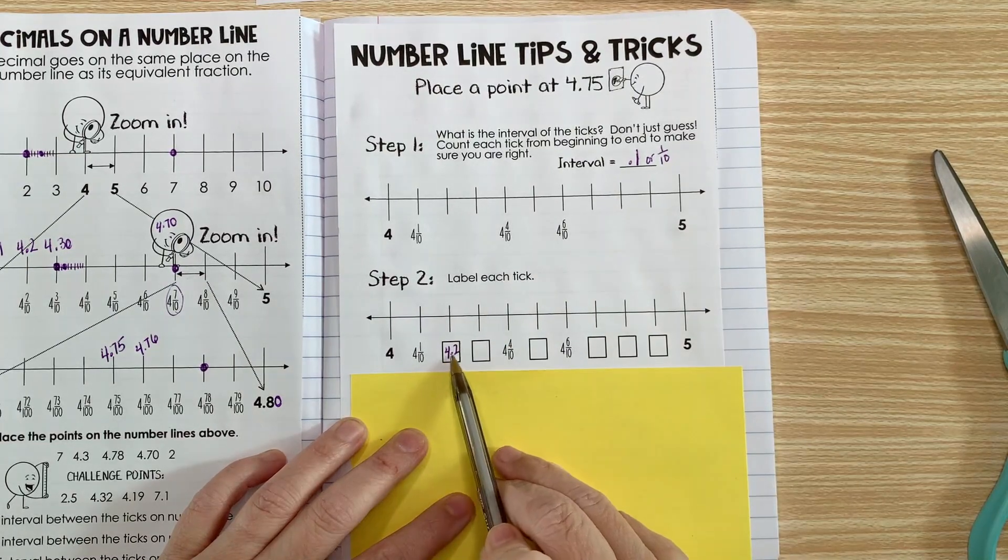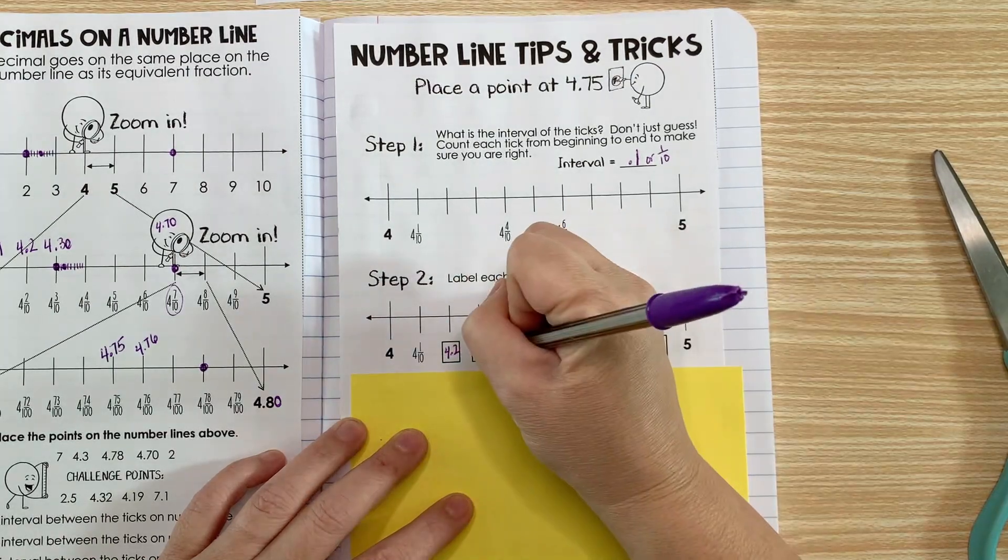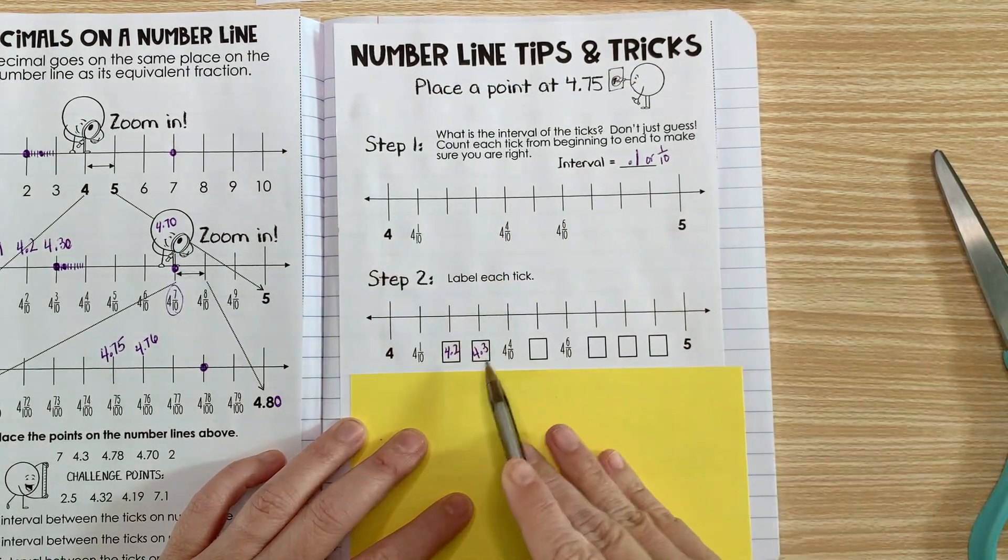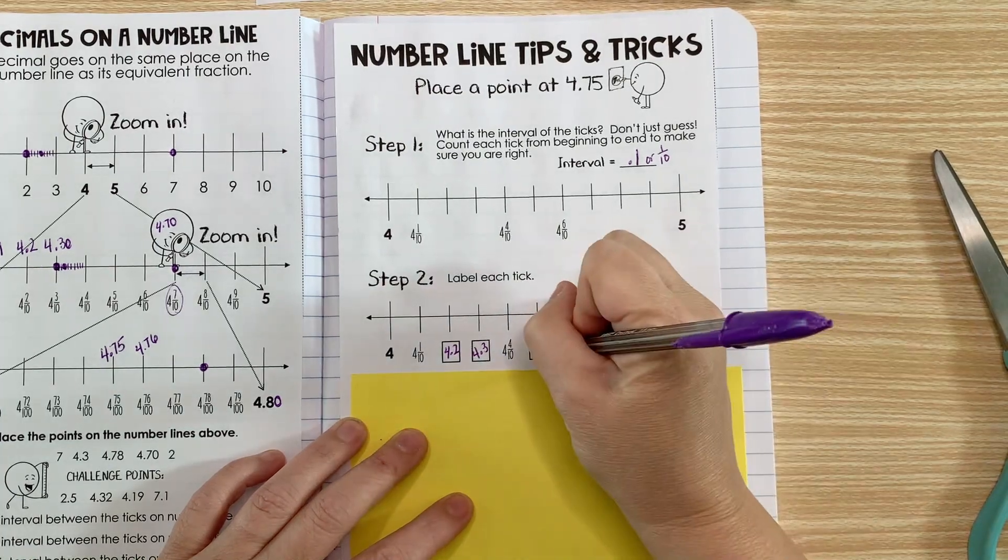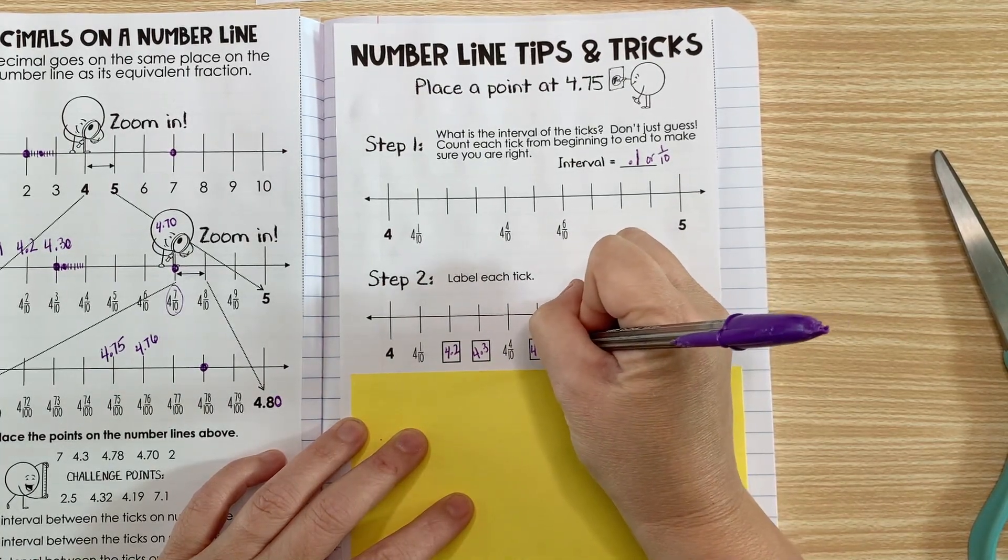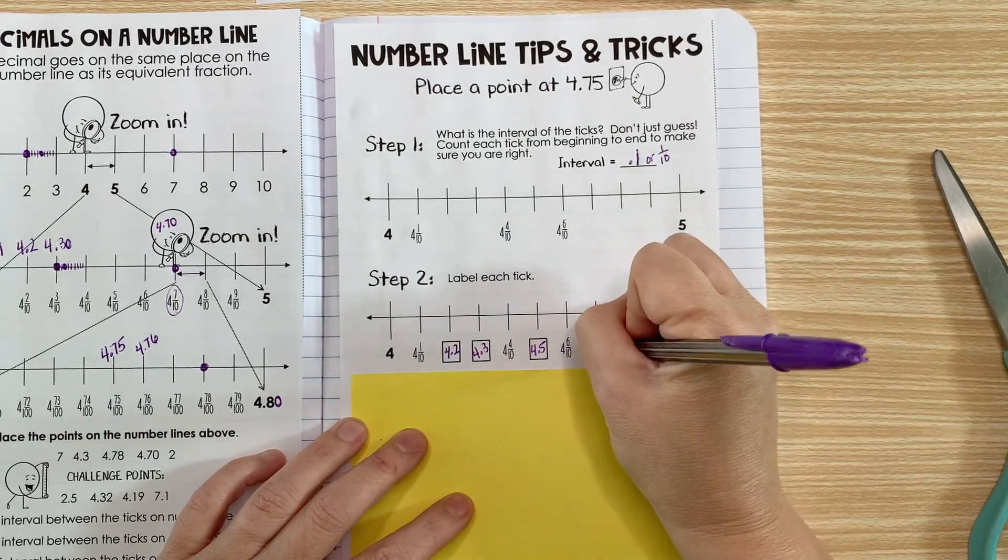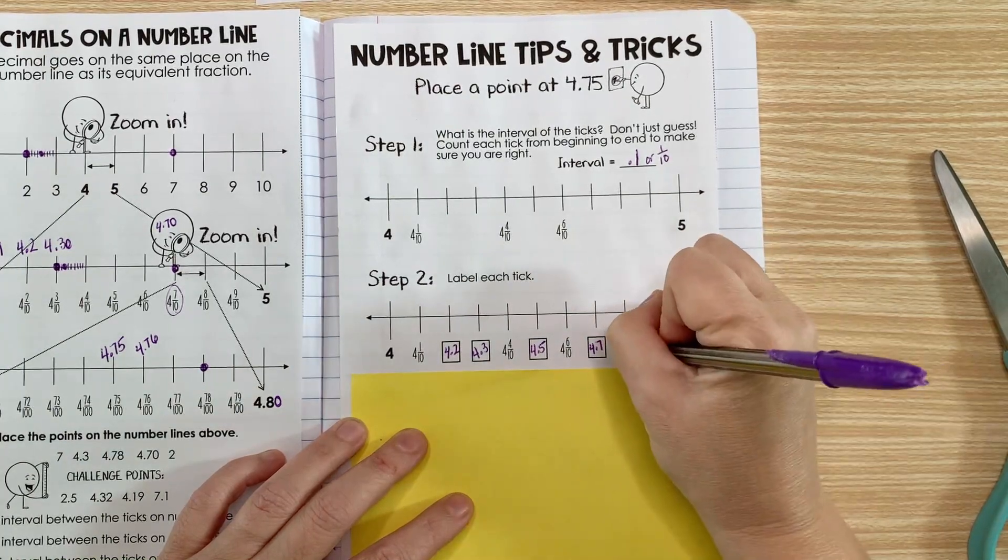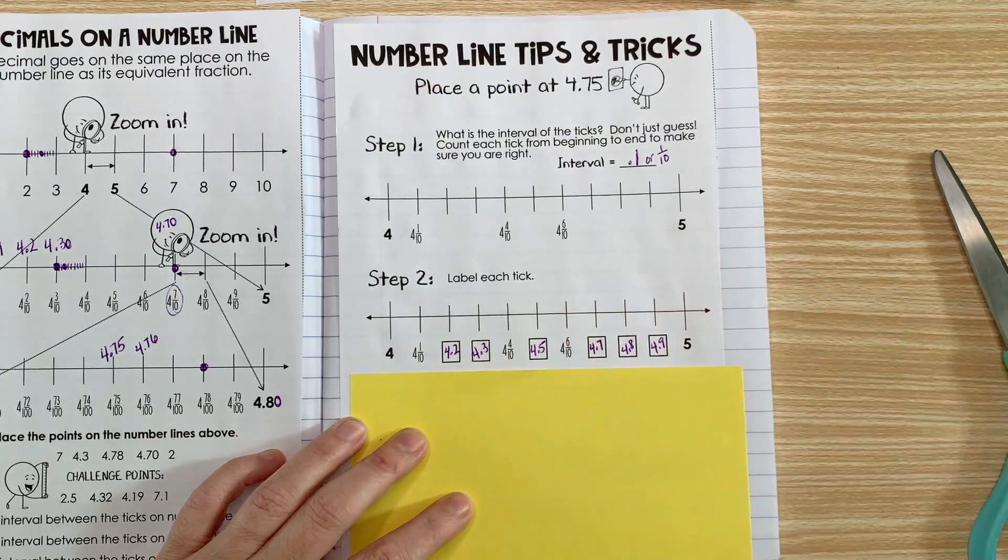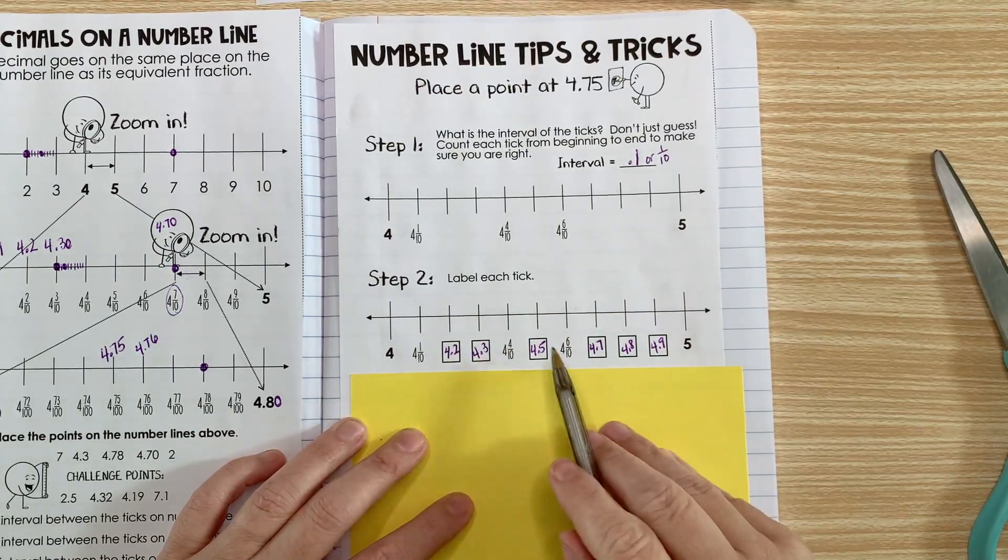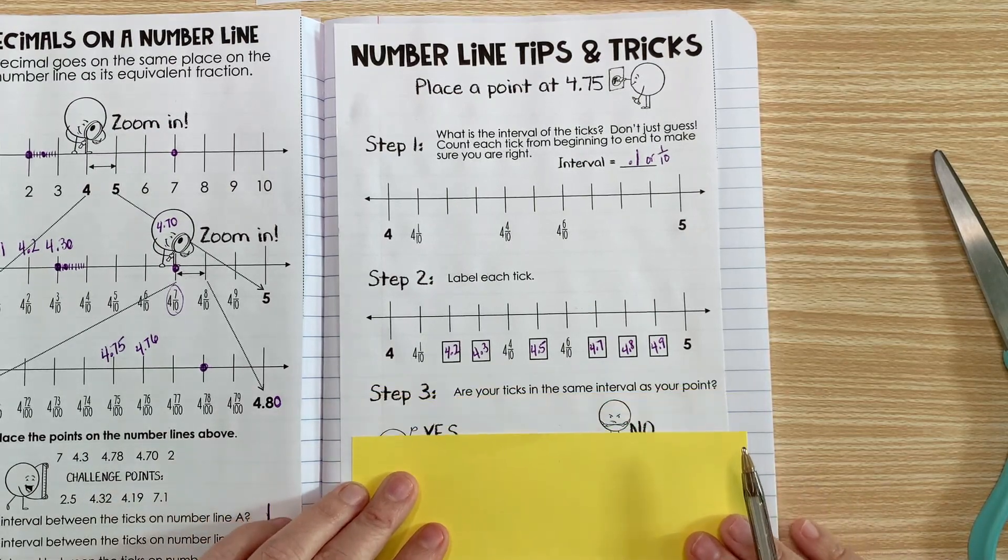4.2, so next would be 4.3, 4.4, next would be 4.5, 4.6, 4.7, 4.8, and 5. Taking the time to label your ticks will help make sure you don't get the problem wrong.